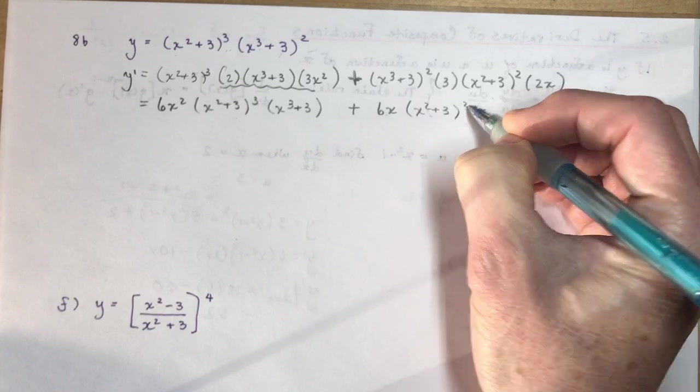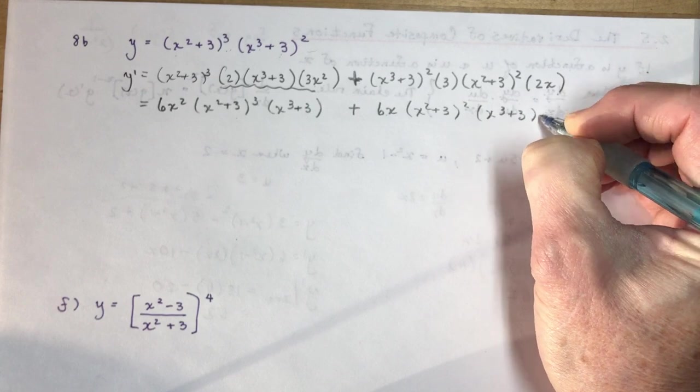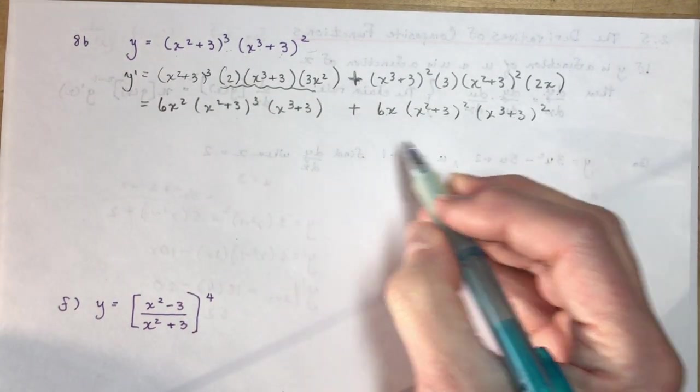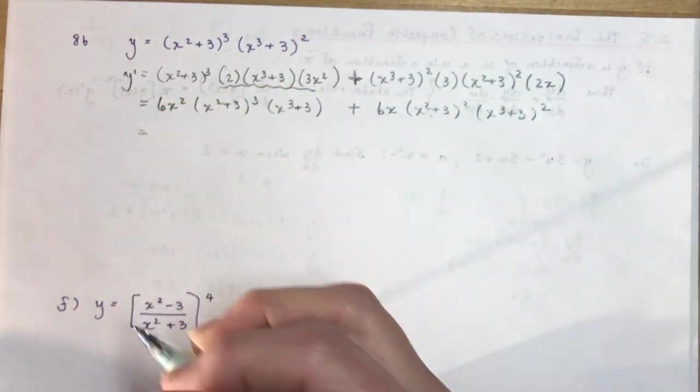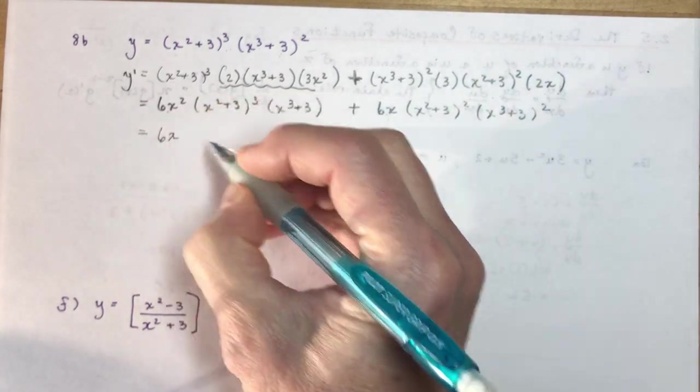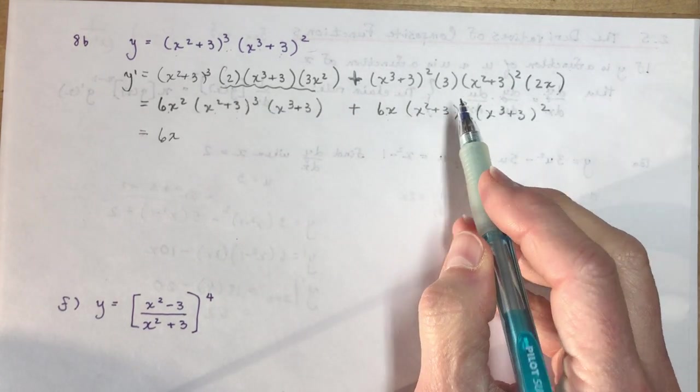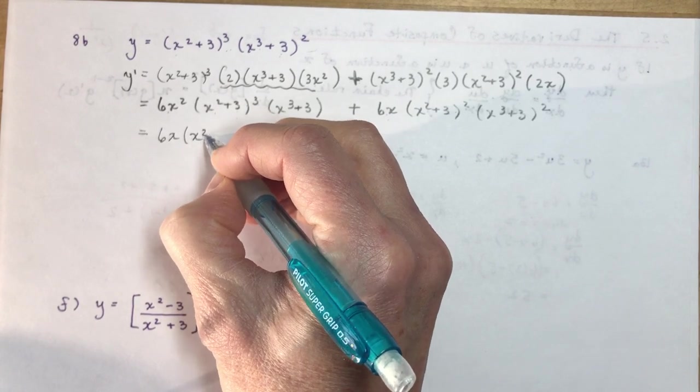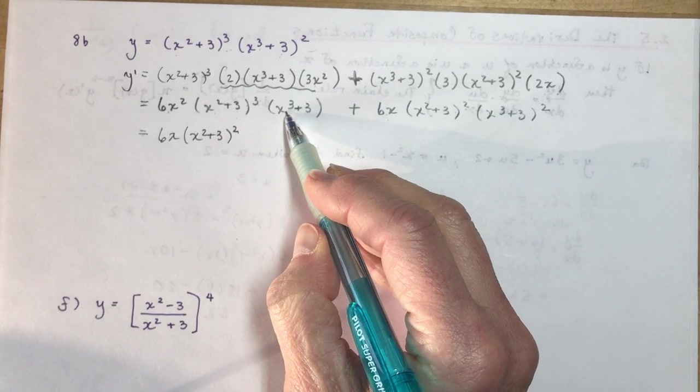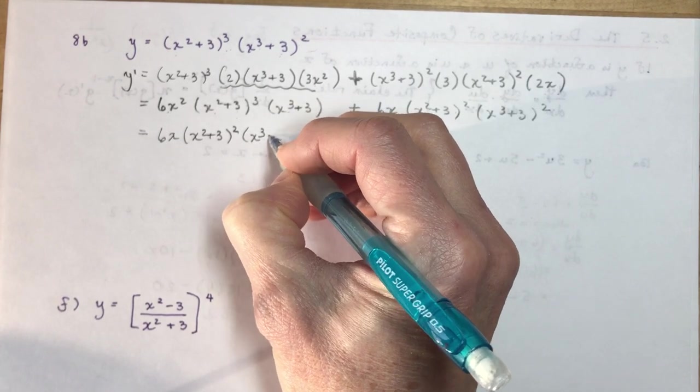And on this side, we have some of the very same things over here. We have 3 times 2 is 6x. Now I'm going to write the (x² + 3)s first so we get them in the same order as the other one. So I have (x² + 3)². And then I have an (x³ + 3)². Okay, so now you want to look left and right. What can I take from each of them? So they both have a 6x, right?